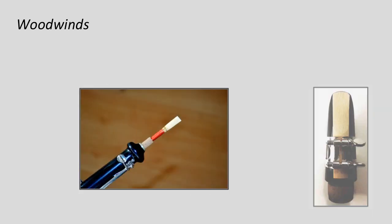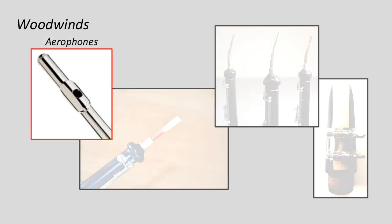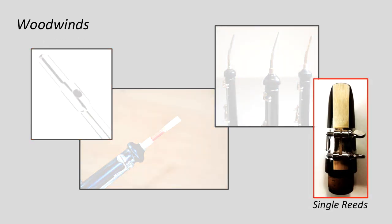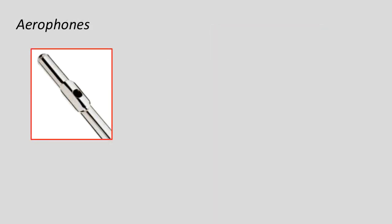To start our overview of woodwind instruments, we're going to go back to the mouthpieces which we discussed earlier. The mouthpieces are incredibly important in how they make sound and in the resulting tone color of each instrument. There are three subgroups within the woodwind section based on the type of mouthpiece the instrument has: the aerophones, the single reeds, and the double reeds. We're going to start our discussion with the aerophones, or flute family.